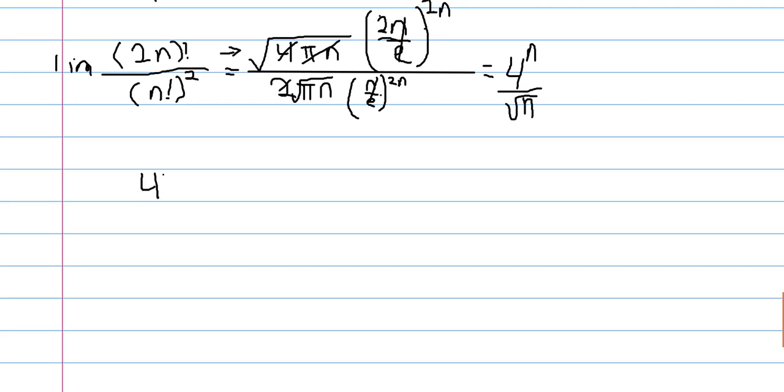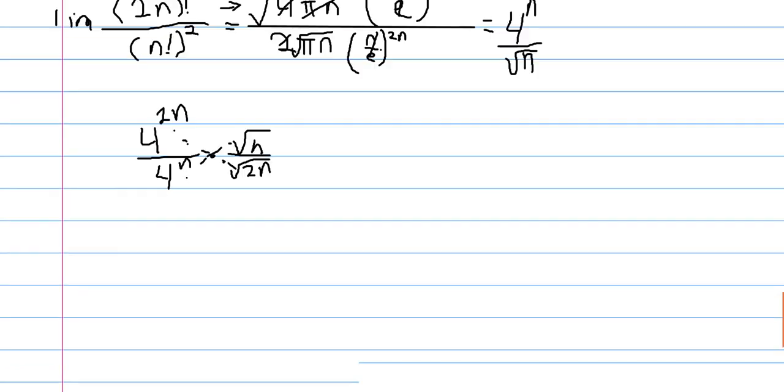So we get 4 to the 2n over 4 to the n. And here I'm just flipping the fractions so that we have corresponding terms. So this is f of 2n and this is f of n. So these two, the 4 to the 2n and 4 to the n, we just get 4 to the n.